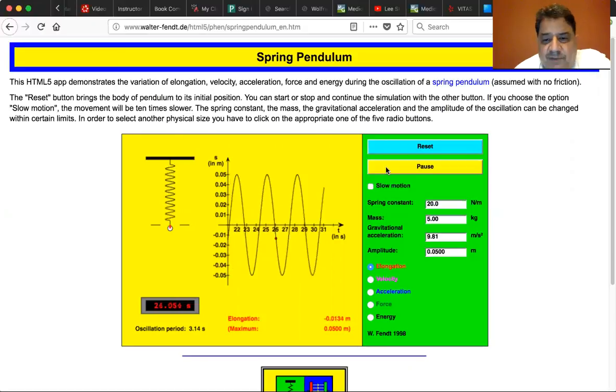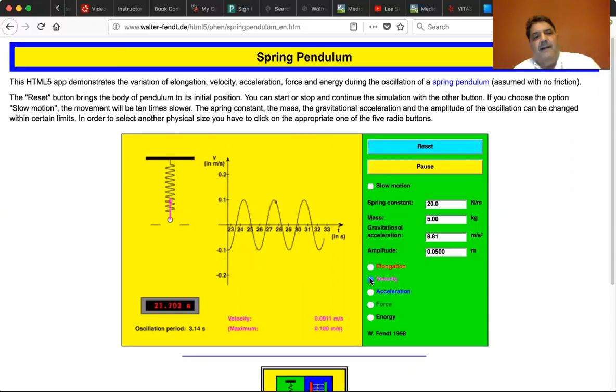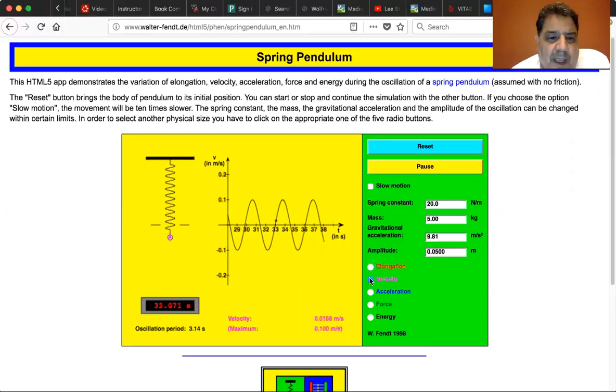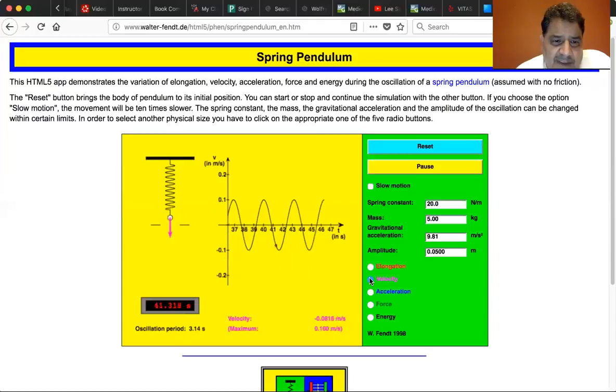We can show the velocity, that's the pink line. You can see that the velocity goes to zero at either extent, either when it's all the way up or all the way down, and it actually reverses direction, and the pink line is longest when it goes through the zero crossing.